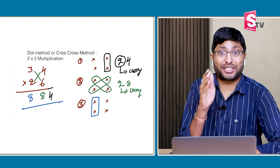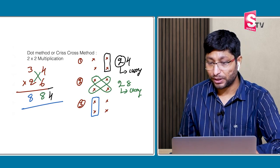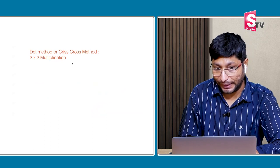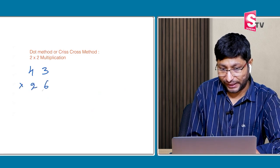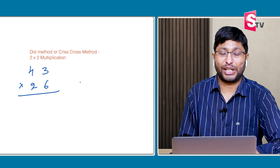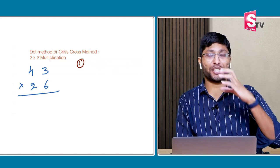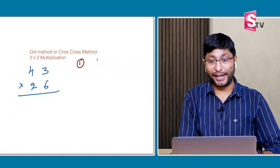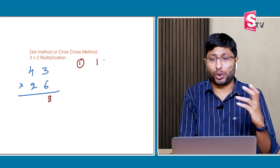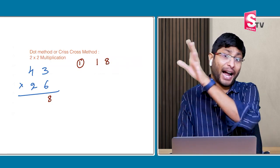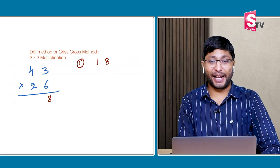If you didn't understand, please go back and watch step by step again. Now I will do it without steps — doing the steps in my mind. 43 multiplied by 26. Step 1: units place into units place — 3 sixes are 18. Write down the 8, 1 will be carry.